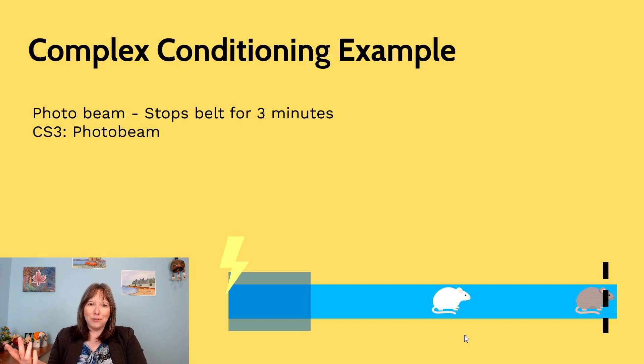Rats are very trainable, they'll learn about this very quickly. The first time might be a fluke, might have to happen by mistake, but once they figure it out they'll learn that crossing the photo beam, even with their nose or an ear or a tail, will make the conveyor belt stop for three minutes. So this becomes conditioned stimulus three.